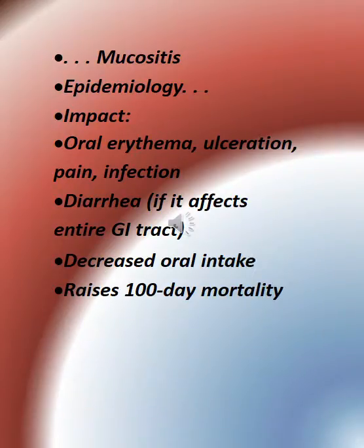Mucositis: Epidemiology and Impact. Clinical manifestations include oral erythema, ulceration, pain, infection, and diarrhea if it affects the entire GI tract. Additional consequences include decreased oral intake, and it raises 100-day mortality.